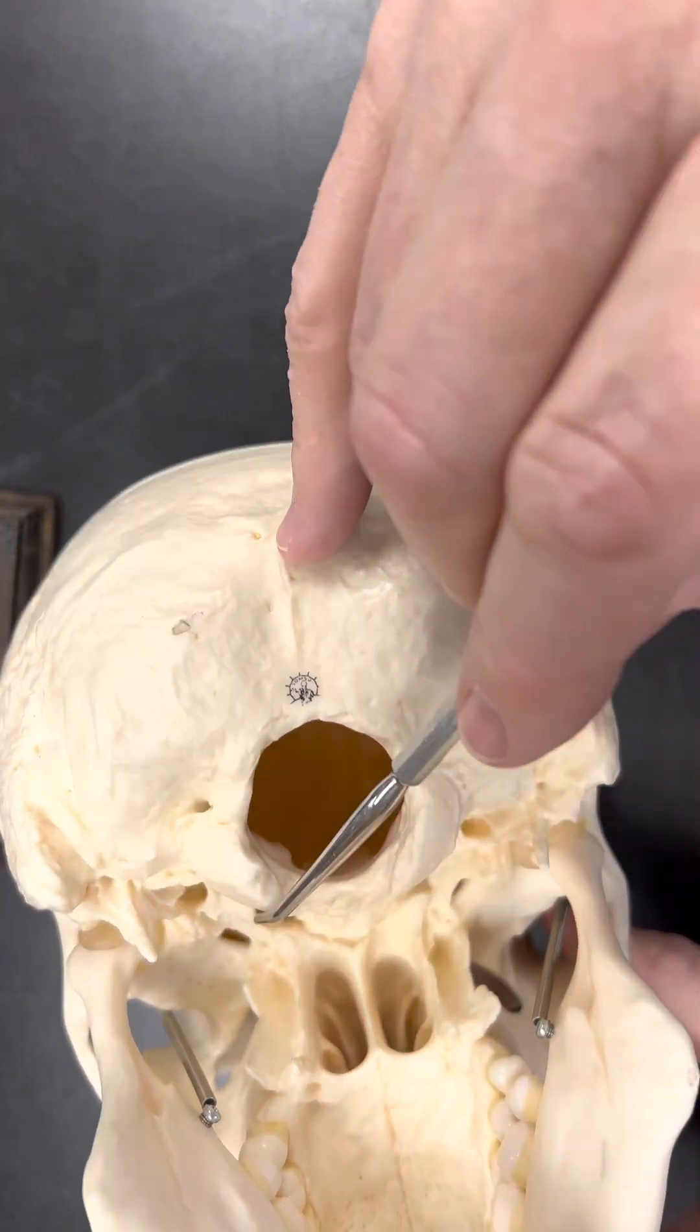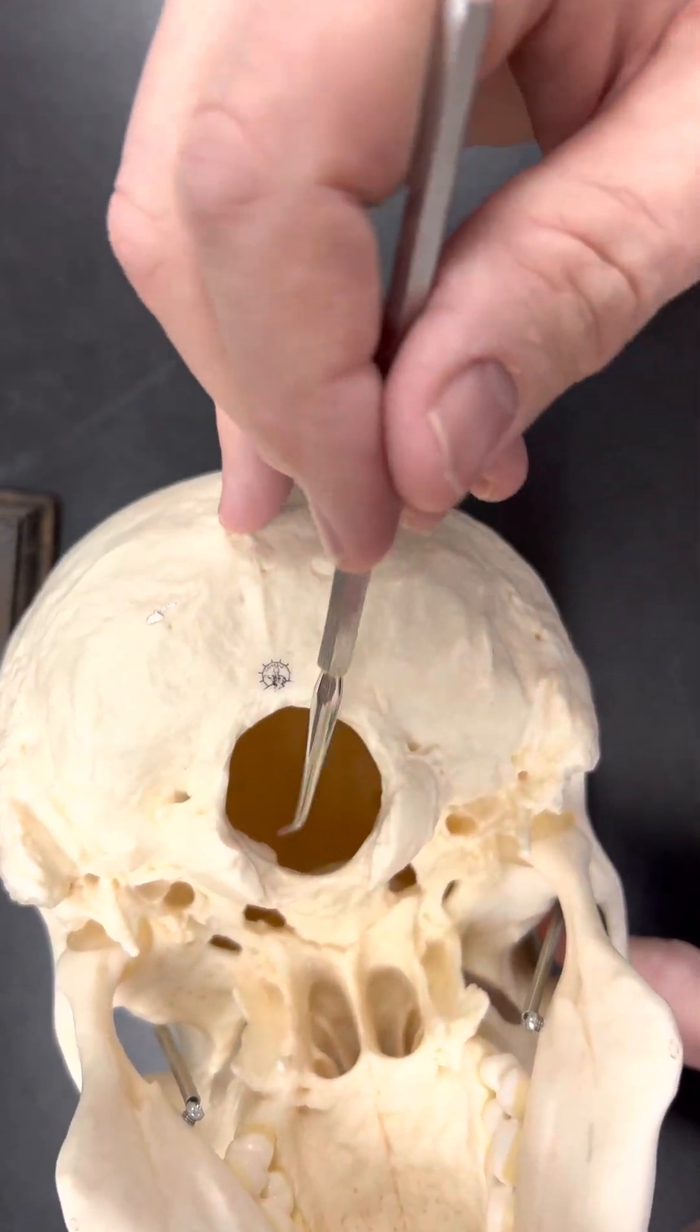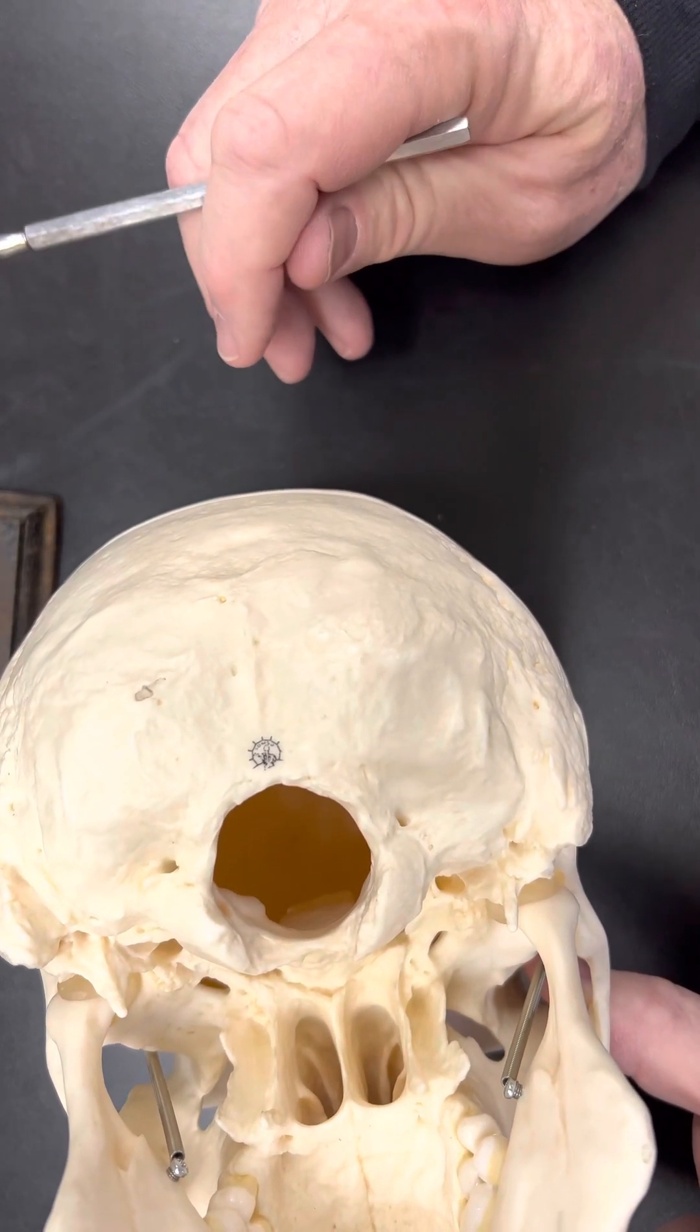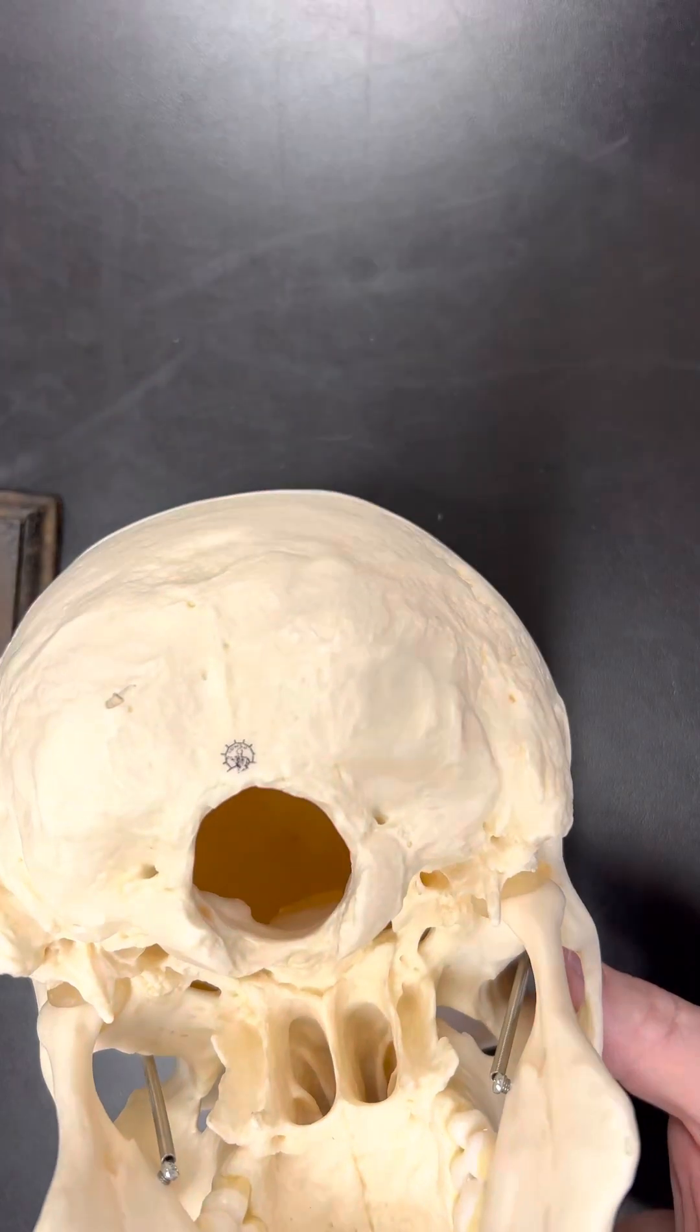So that's the frontal bone, temporal bone, and the occipital bone. Thanks for watching.